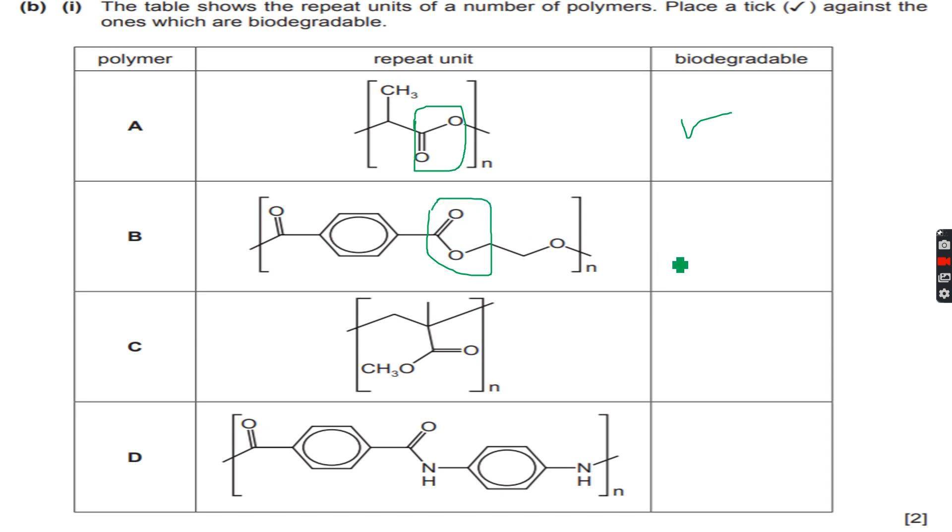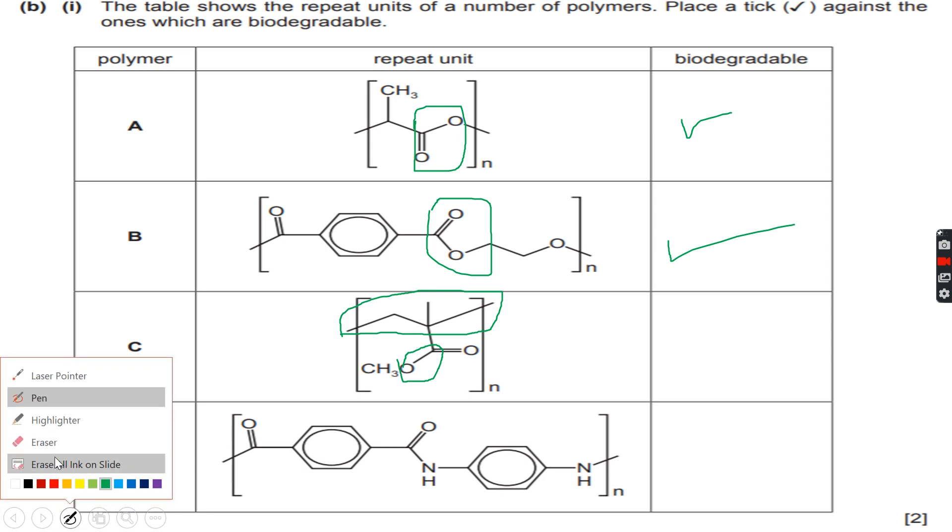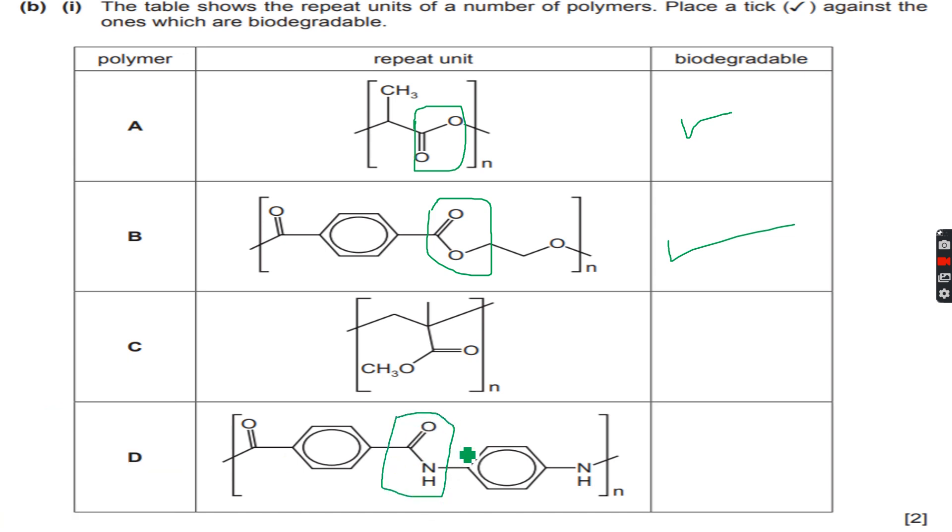However, in this we do have an ester link but it is not inside the polymer chain because this is the main polymer chain. No ester, so I will not place a tick over here because it will not break down upon hydrolyzing. And then for D, we have an amide group, definitely biodegradable because hydrolysis can happen. The amide group is inside the polymer chain, so I'll place a tick over here.